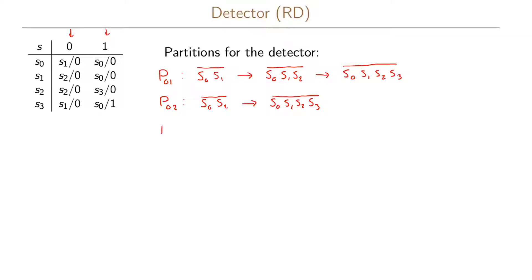Continuing with p03, we start by grouping s0 and s3. From the state transition table, for input 0 we want s1 and s1 in the same state and s0 and s0 in the same state. So we have the partition {s0, s3} with s1 in its own partition and s2 in its own partition. This gives us three different partitions, which is not useful because with four states and two state variables we cannot assign a shared variable across three different partitions.